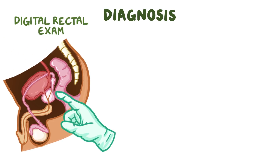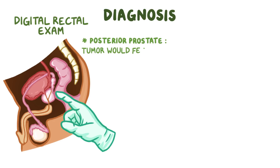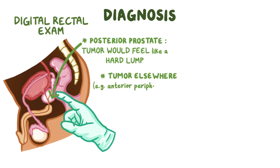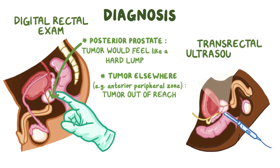Prostate cancer can be detected by a digital rectal examination, where a finger is inserted into the rectum to feel against the anterior wall of the rectum, which lies along the posterior part of the prostate. A tumor located here would feel like an irregularly hard lump, but if the tumor arises elsewhere, like in the anterior peripheral zone, then the tumor would be out of reach during the digital rectal exam. Another approach is to use a transrectal ultrasound or MRI to image the prostate.